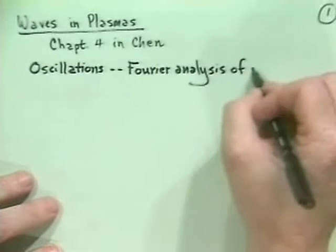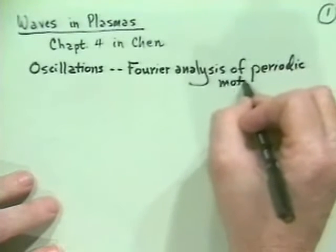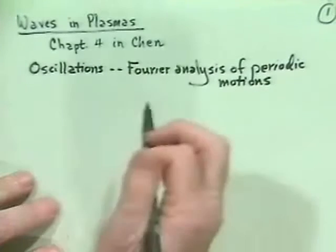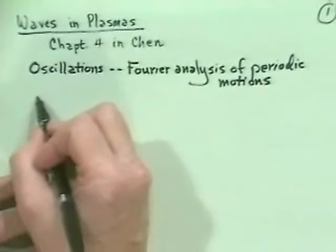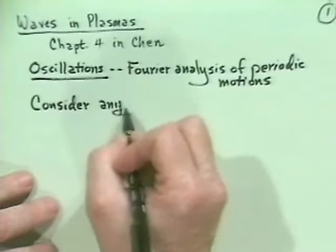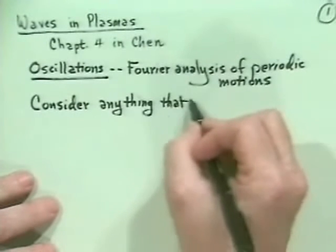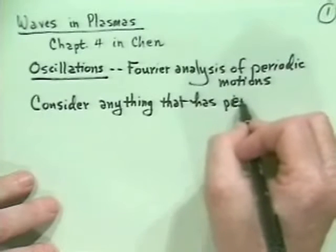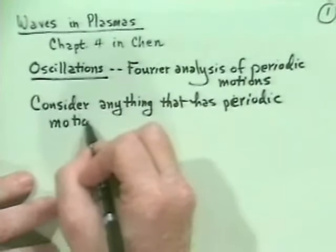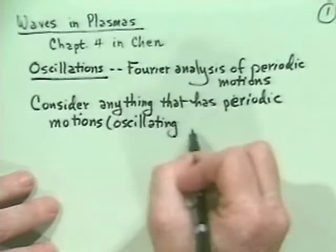The idea is to consider something which in space and time has oscillatory behavior. So let's consider anything — a fluid, plasma, and so forth — that has periodic motions or oscillating components in both space and time.